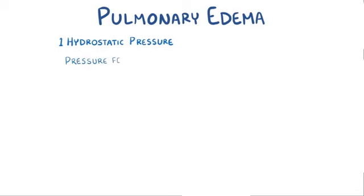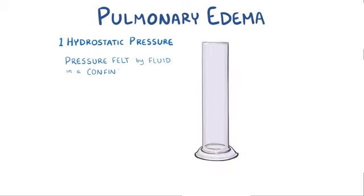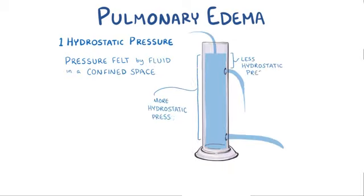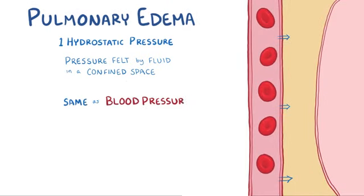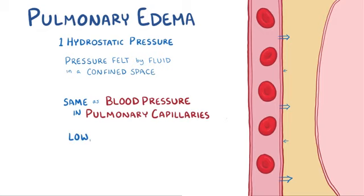Hydrostatic pressure refers to the pressure felt by fluid in a confined space, pushing the fluid out of that space. In the interstitial space, it's the same thing as the blood pressure in the pulmonary capillaries, and because the pulmonary circulation is a low pressure system, the hydrostatic pressure is pretty low, but it's still higher than the hydrostatic pressure exerted by the interstitial fluid of the lungs, which is almost zero.